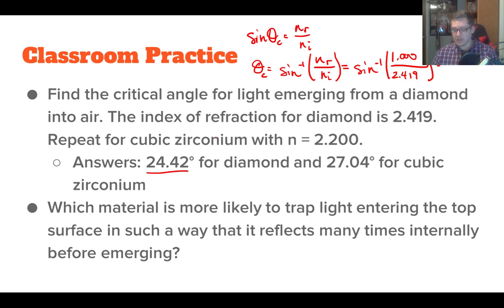If we do the same thing for cubic zirconium, we just plug in instead of 2.419, we use 2.200. If we take sine inverse of 2.2 inverse, we get 27.04. Those would be the critical angles. So if you were trying to figure out what angle would not allow this light to refract out if it's traveling from diamond into air, you would have to do it at greater than 24.42 or 27.04.